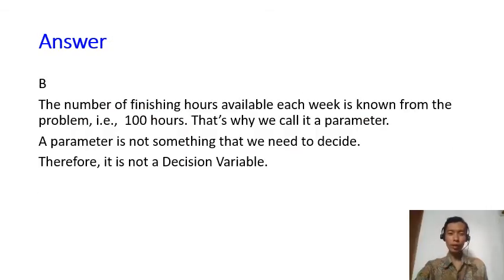Well, the answer is because the number of finishing hours available each week is already known from the problem, 100 hours. We call it a parameter. That's why it's not something that we need to decide. It is already known we have 100 hours of finishing hours. Therefore, it is not a decision variable.